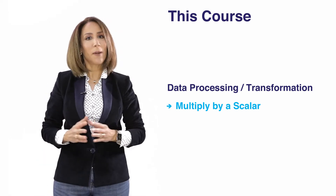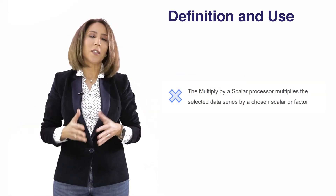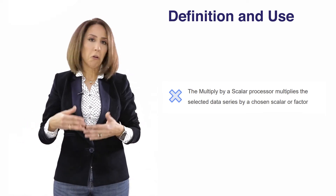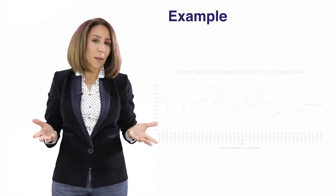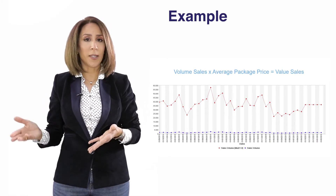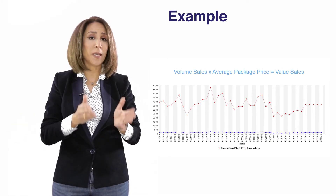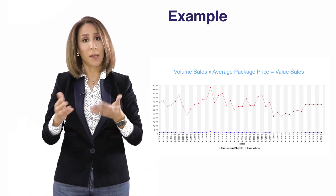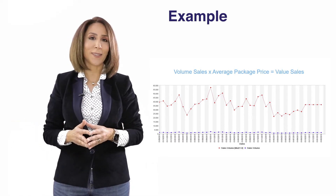Multiply by a scalar is pretty straightforward — take a variable and multiply it by a factor or a given scalar. For example, if we want to convert volume sales into value sales, we take the volume sales data series, multiply it by the average price, and we obtain the value sales.